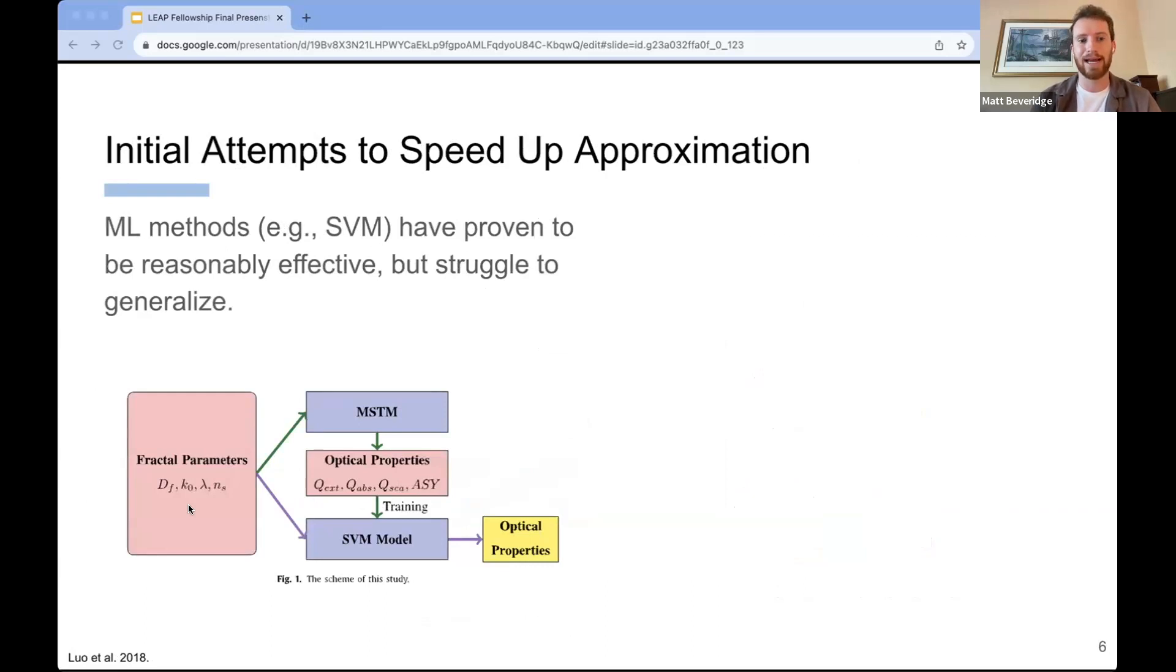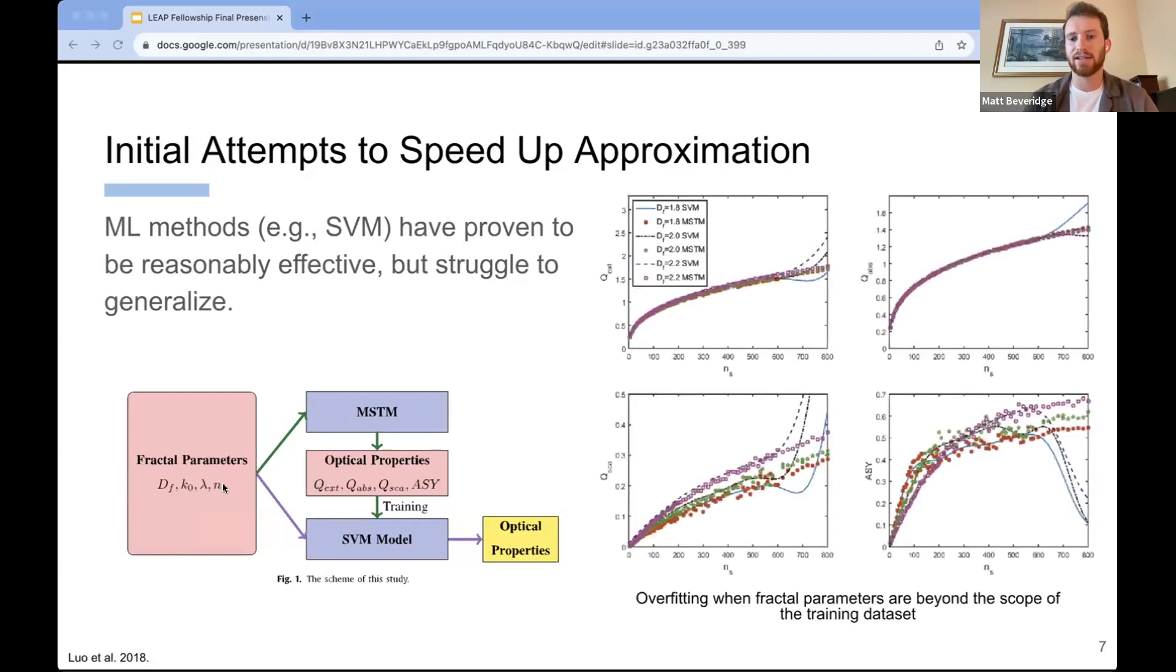Past methods for this type of problem have included support vector machines or simple MLPs. These perform generally well, but struggle to generalize beyond the training set that they're trained on. So what you're seeing here on the right is a model that has been trained on lower complexity aggregates. So one representation of the complexity of an aggregate is the fractal dimension. On the x-axis, what you're seeing is as the size of the aggregate increases, the model performance degrades as we no longer see those samples in the training set. Whereas MSTM, the more analytical solver shown as the scatter points on the plot, continues to show the true trend.